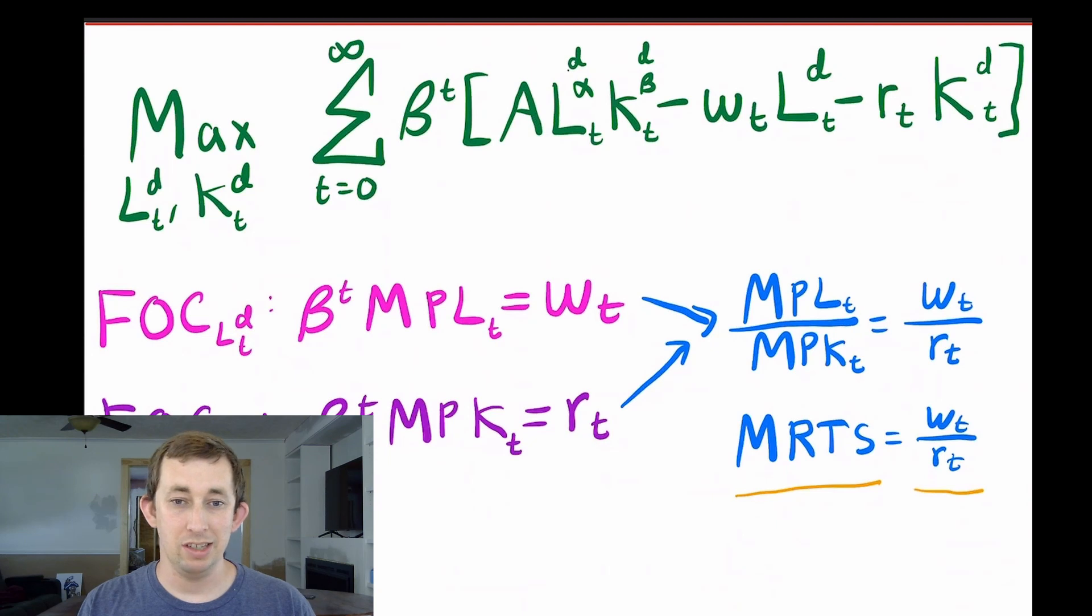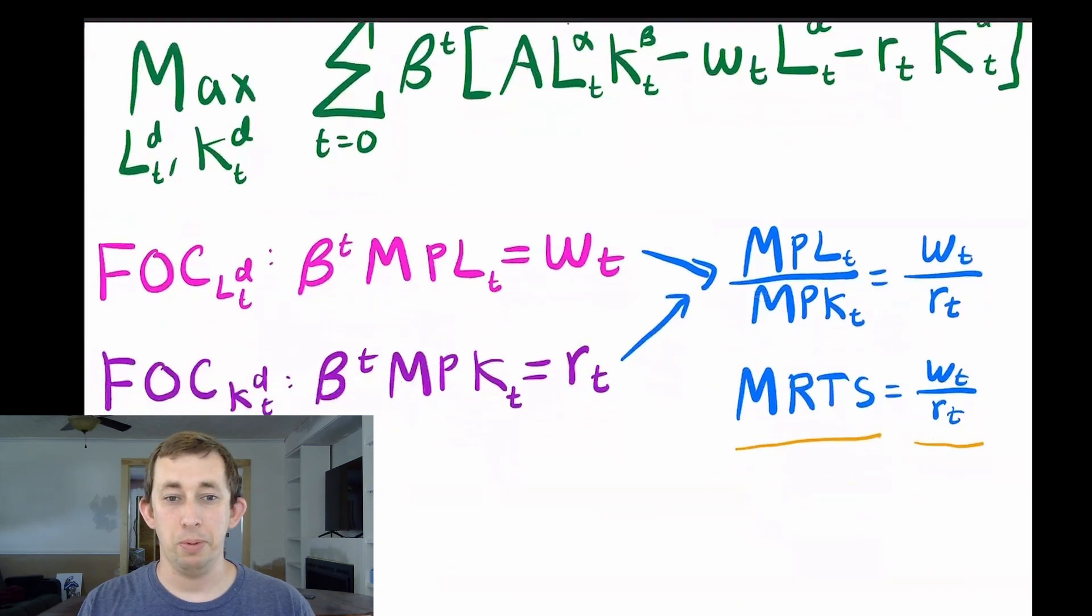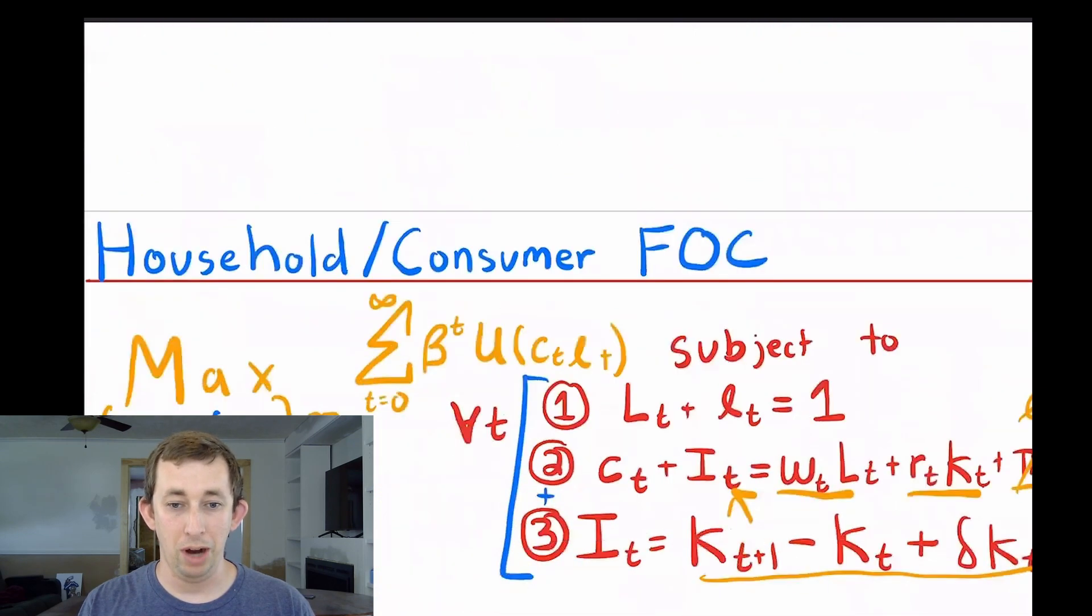We also know that because it's decreasing returns to scale, the amount of profit here is zero. So we don't have any profit to worry about when we go into the household problem.